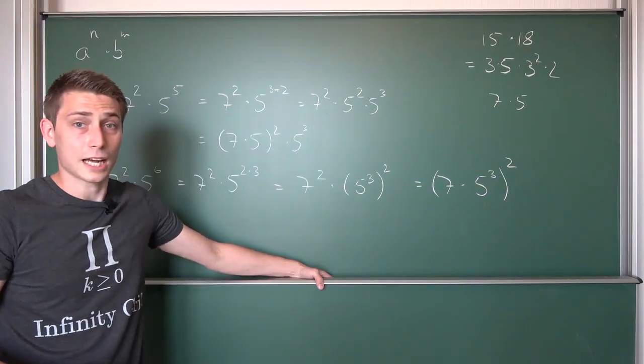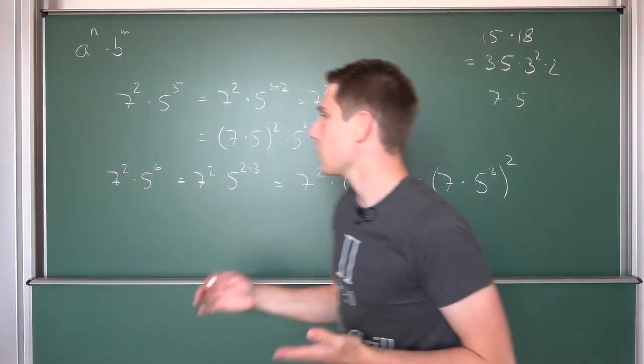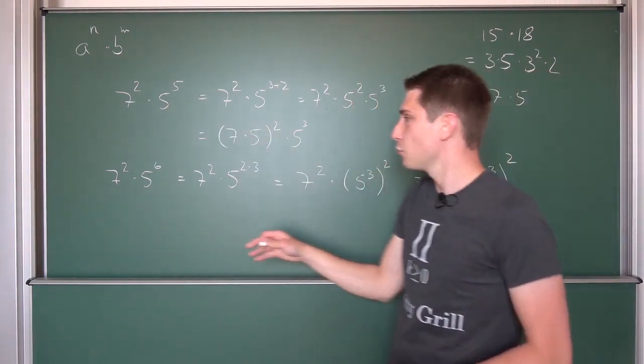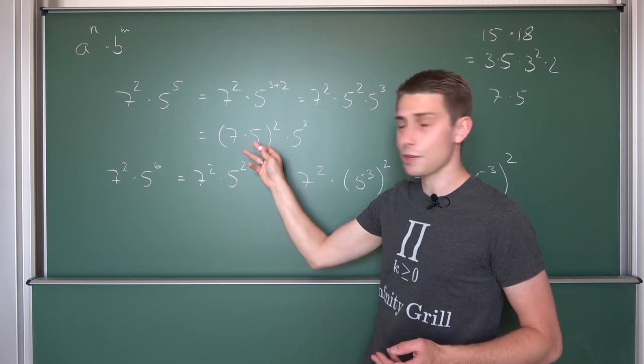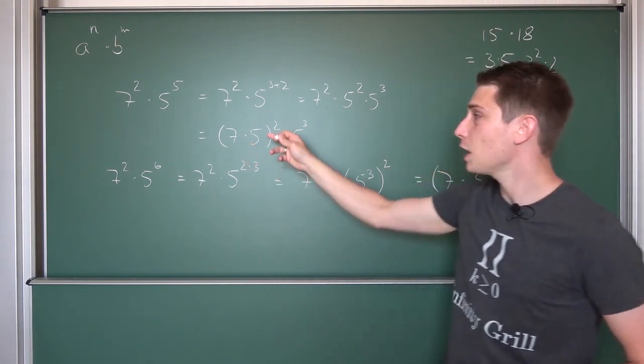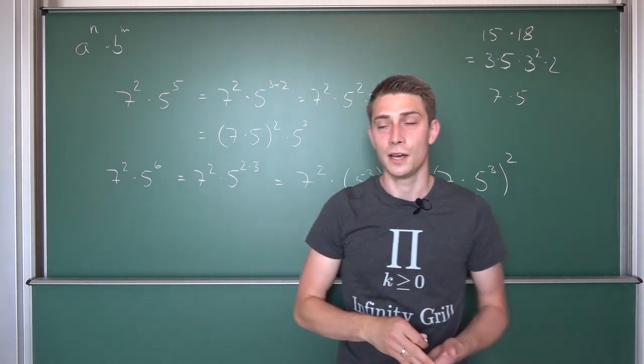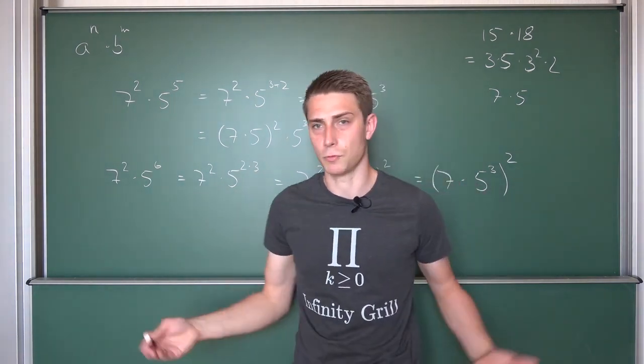And I mean, it's kind of cool. I mean, some of these things are way easier to compute now. 7 squared times 5 to the 5th power, kinda hard to compute. But we have 35, okay? 35 squared. This is something you could maybe compute in your head. It's something a bit over a thousand for example.